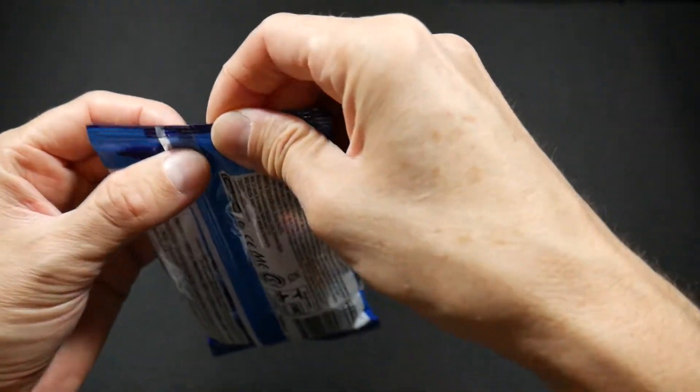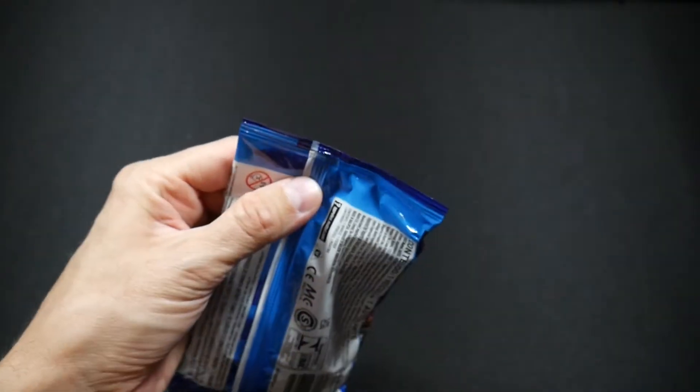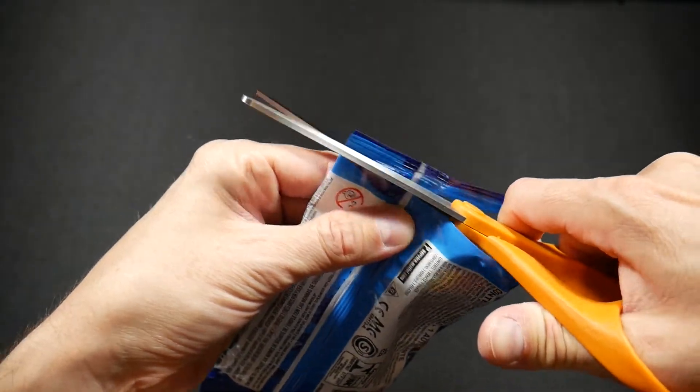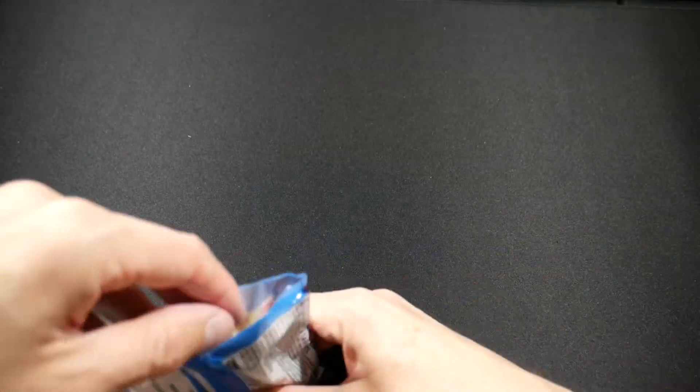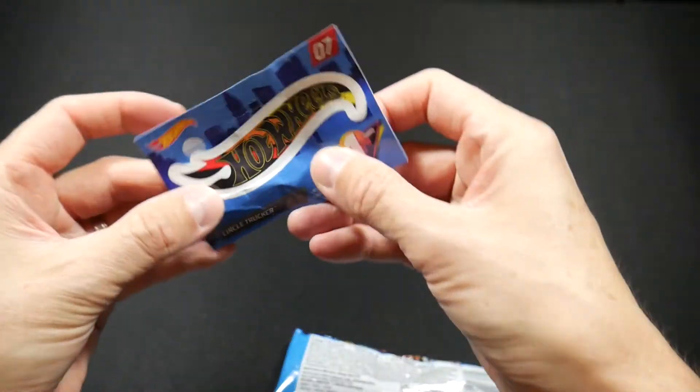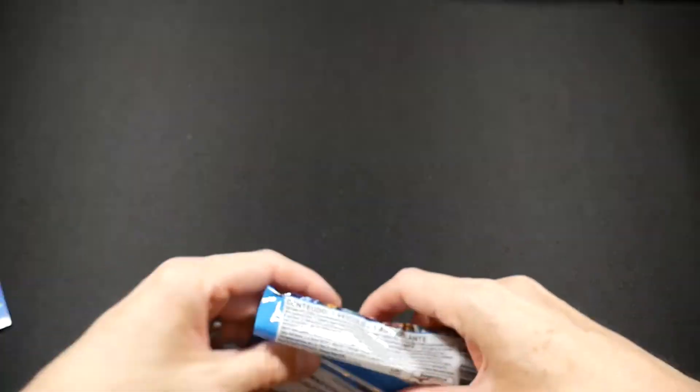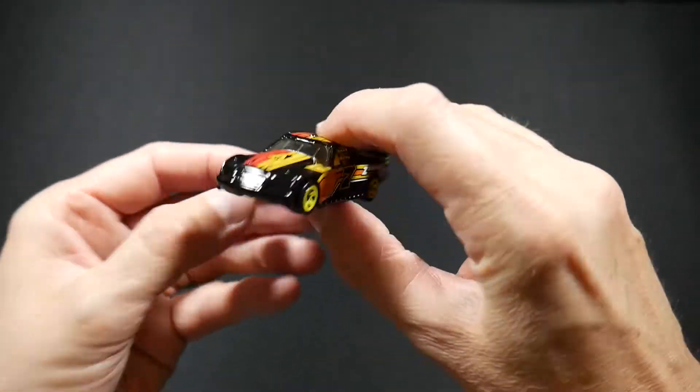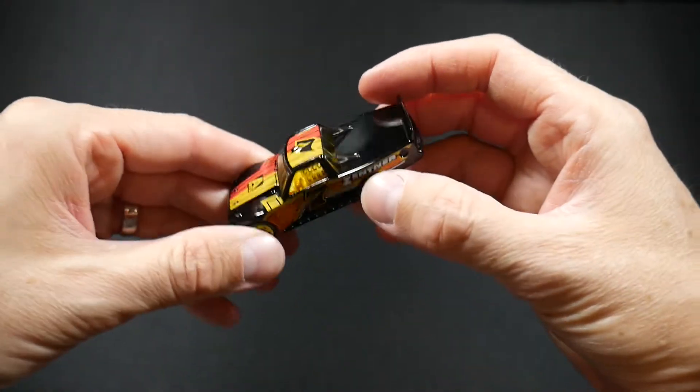Okay, let's start with this guy. Inside we're gonna get a vehicle of some sort and we're gonna get a sticker. I'm trying not to cut the sticker. There we go, there's our sticker Hot Wheels and there's our vehicle.